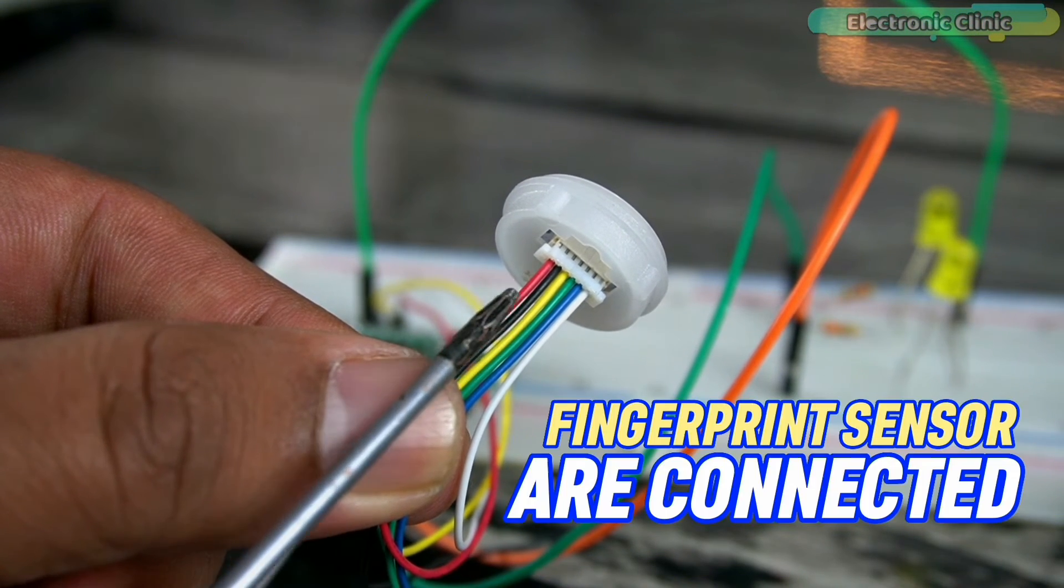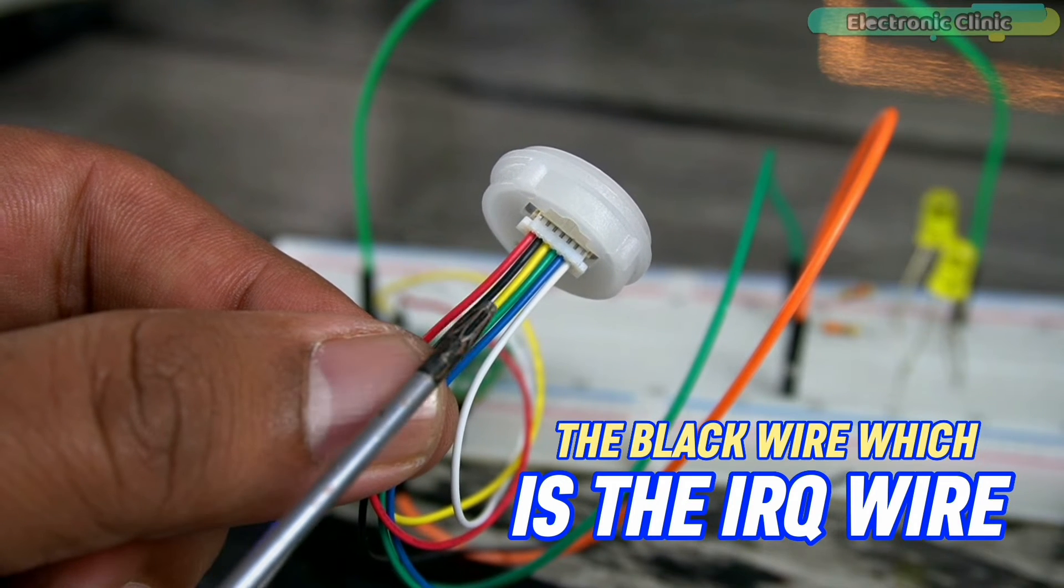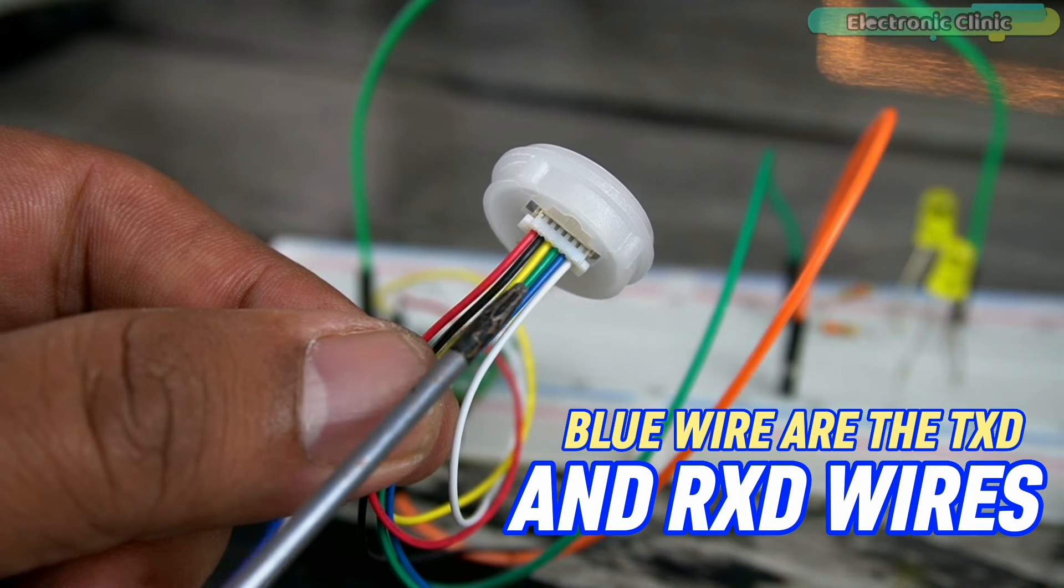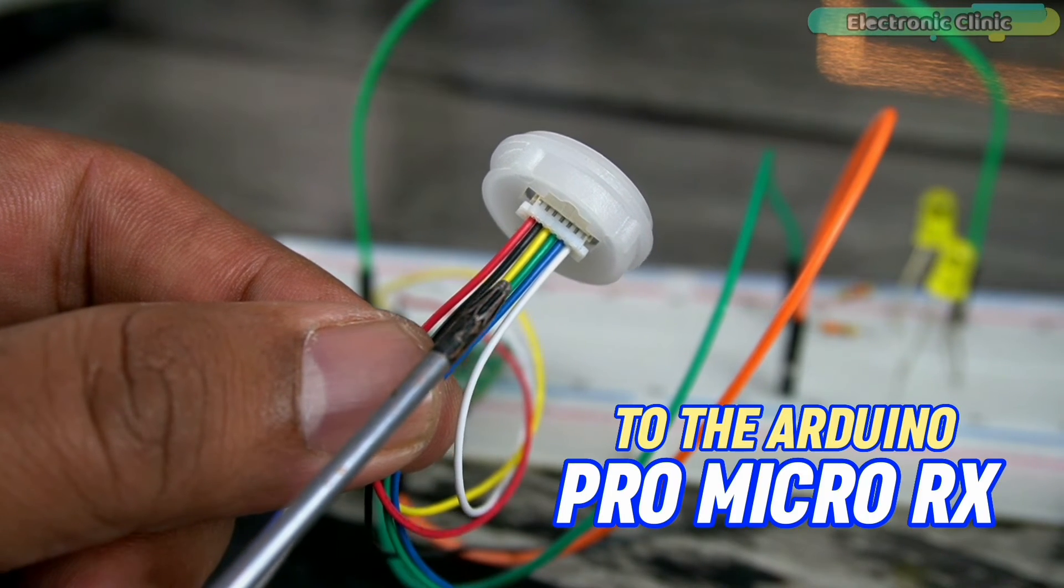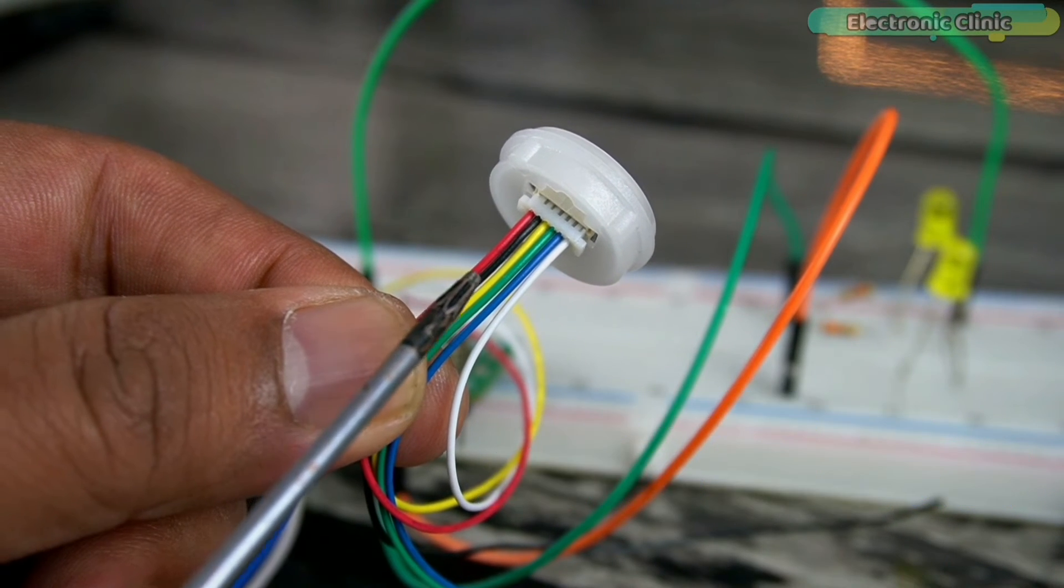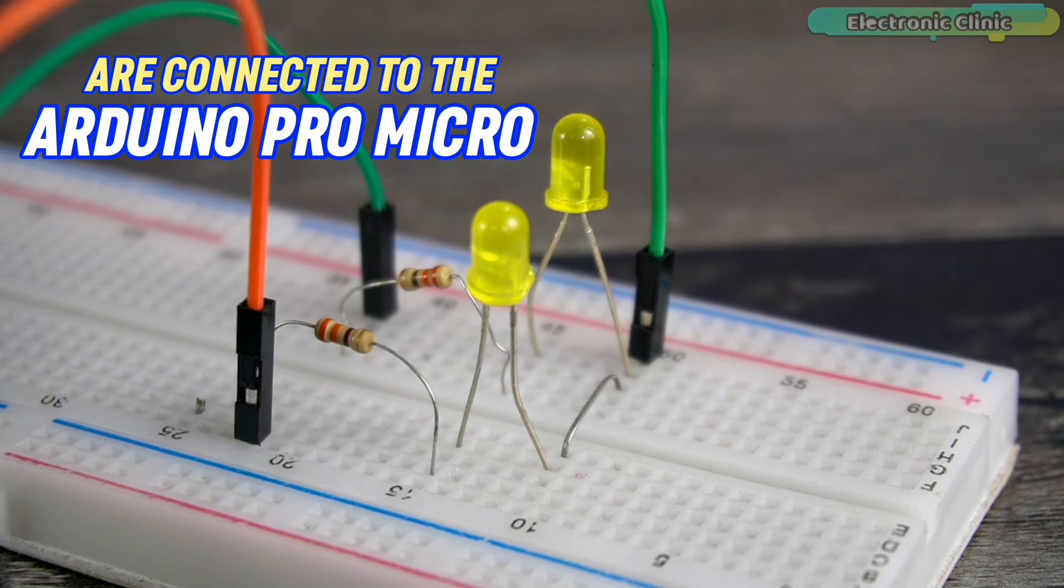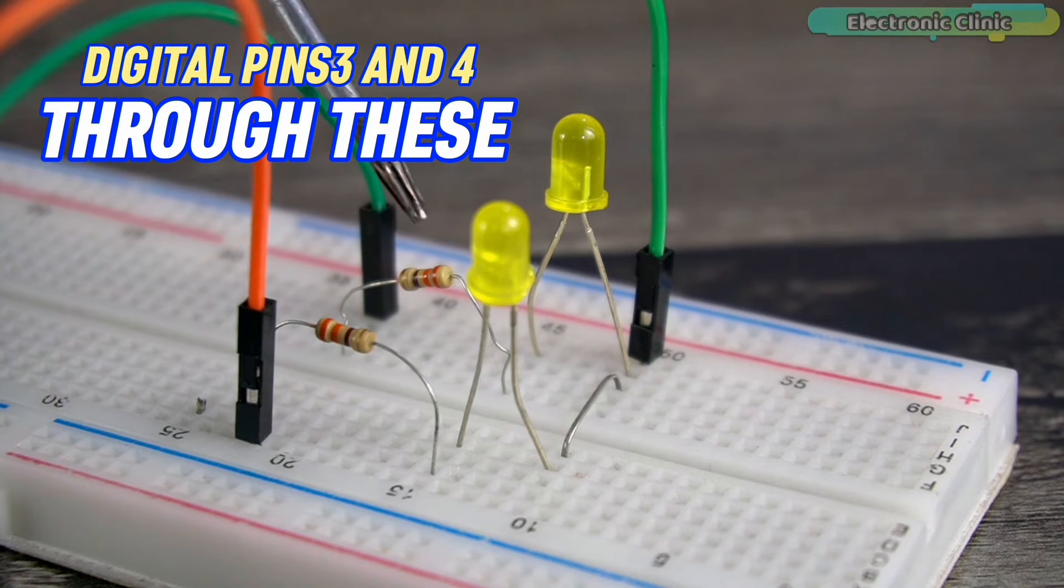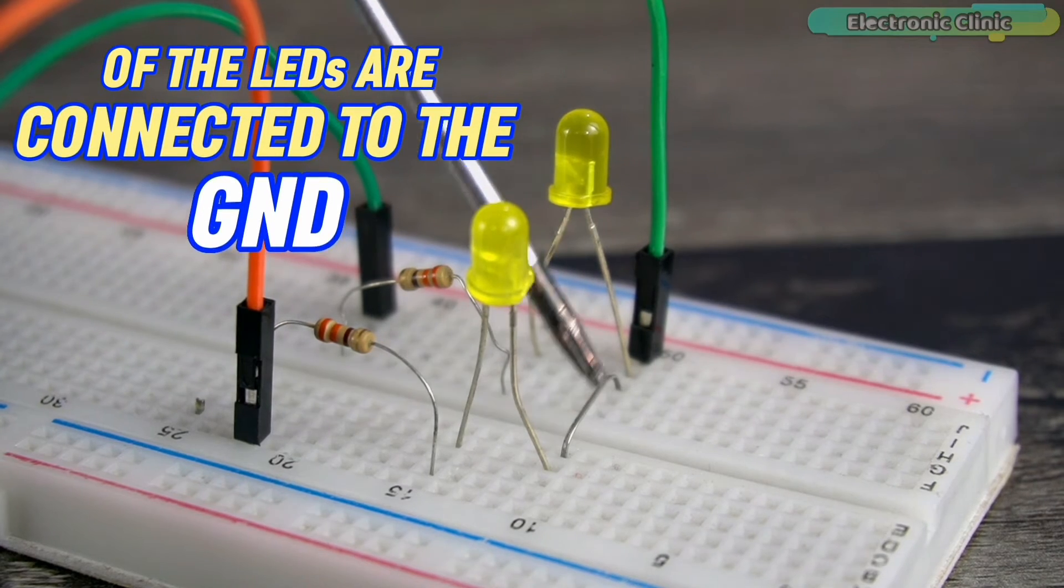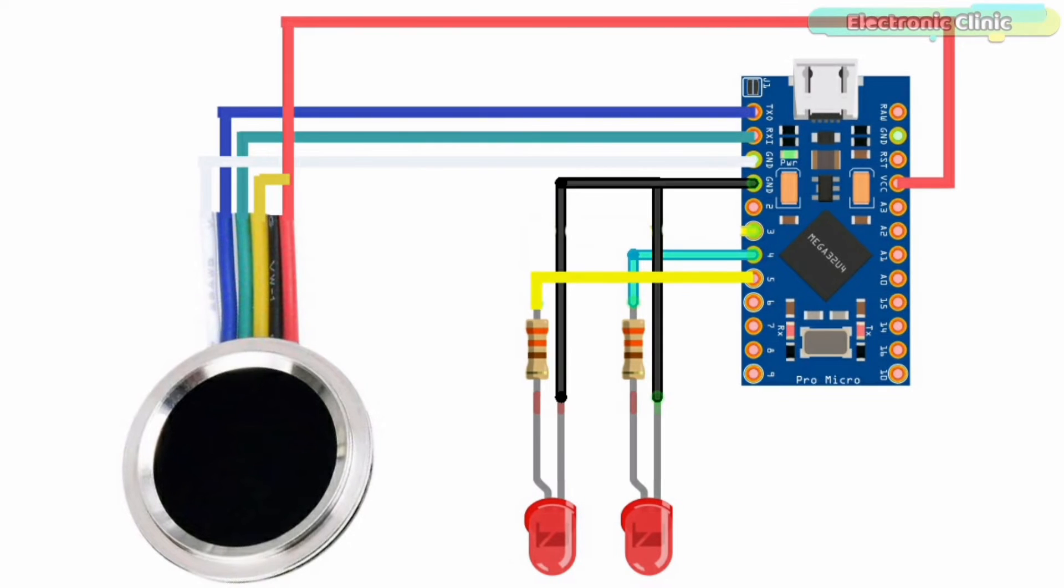The red and yellow wires of the fingerprint sensor are connected to the 3.3 volt pin on the Arduino Pro Micro. The black wire which is the IRQ wire is left unconnected. The green and blue wires are the TXD and RXD wires and these wires are connected to the Arduino Pro Micro RX and TX pins. The white wire is the ground wire and it's connected to the Arduino Pro Micro ground pin. The anode legs of the two LEDs are connected to the Arduino Pro Micro digital pins 3 and 4 through these 330 ohm resistors and the cathode legs of the LEDs are connected to the ground. So that's all about the connections and if you think you have missed anything then you can follow this circuit diagram.